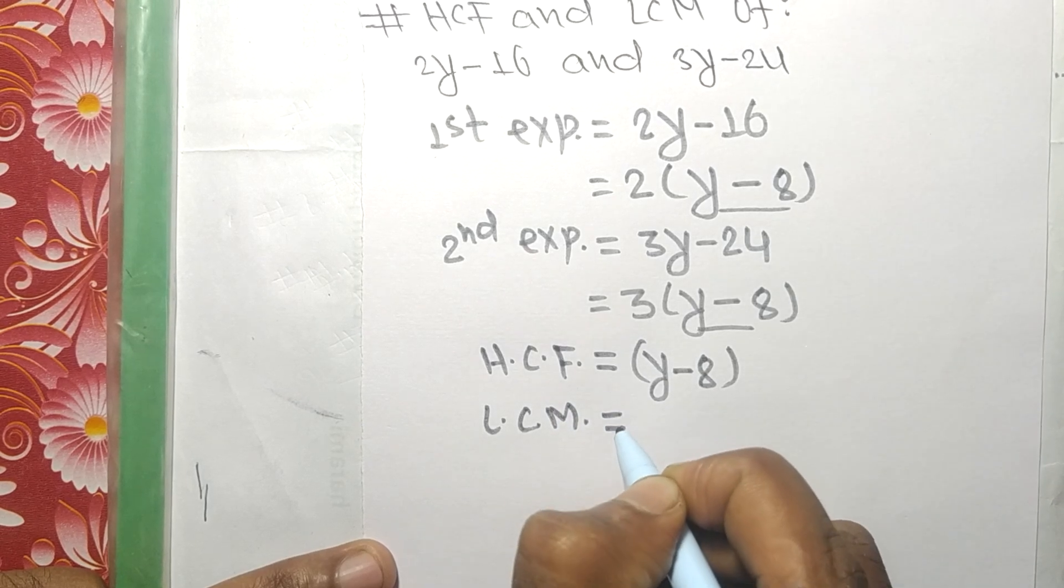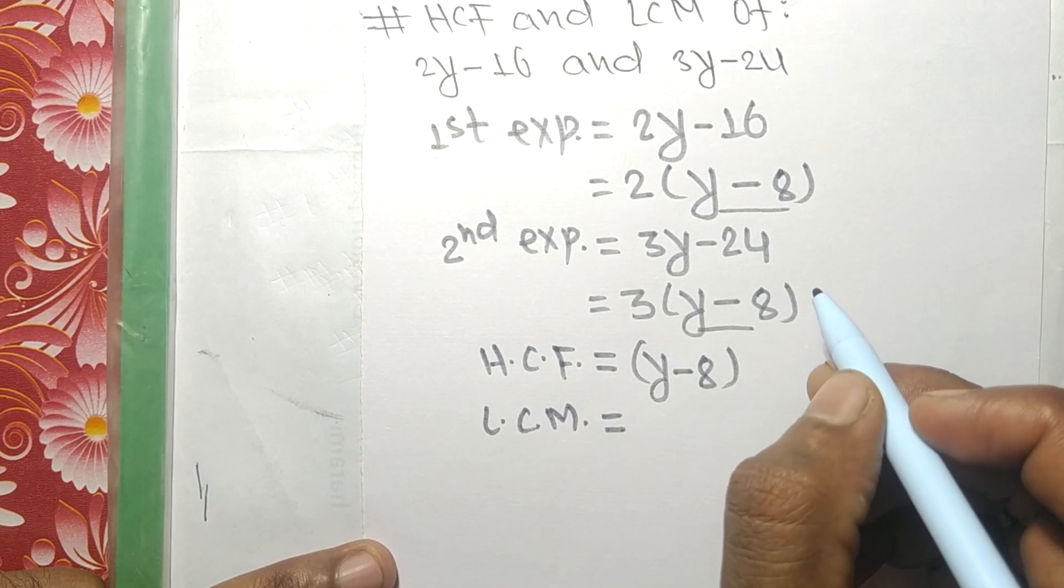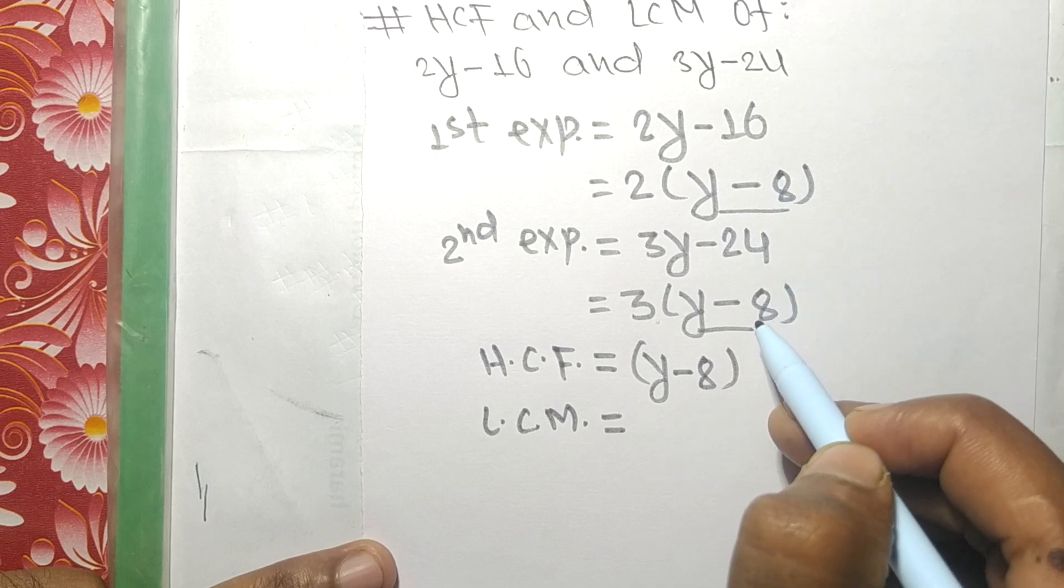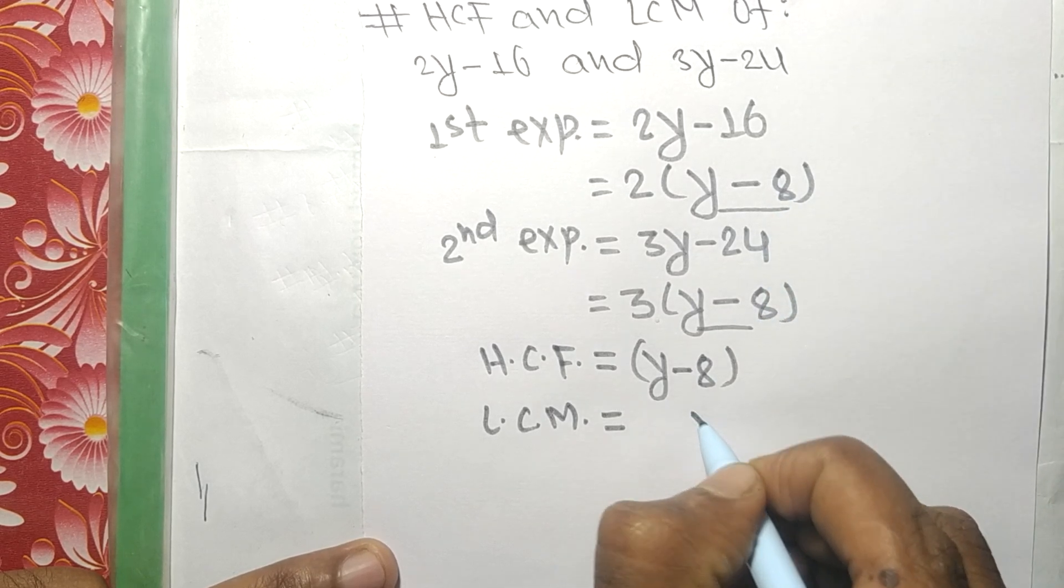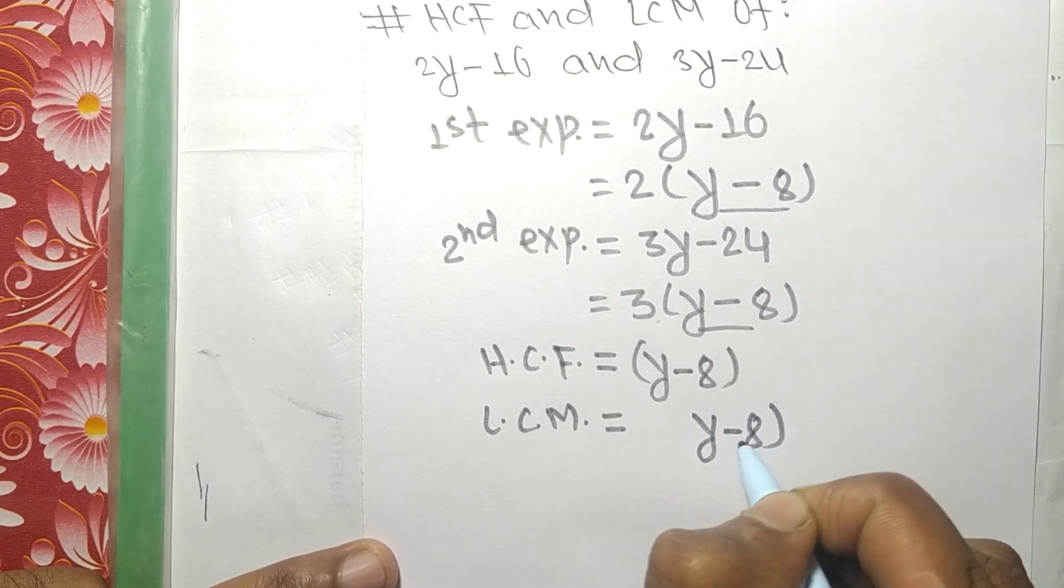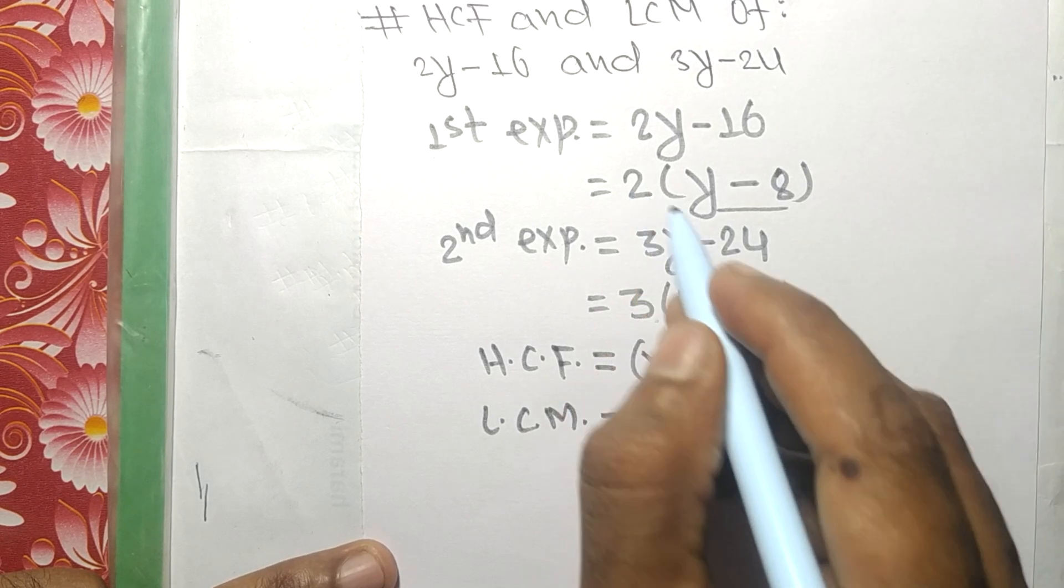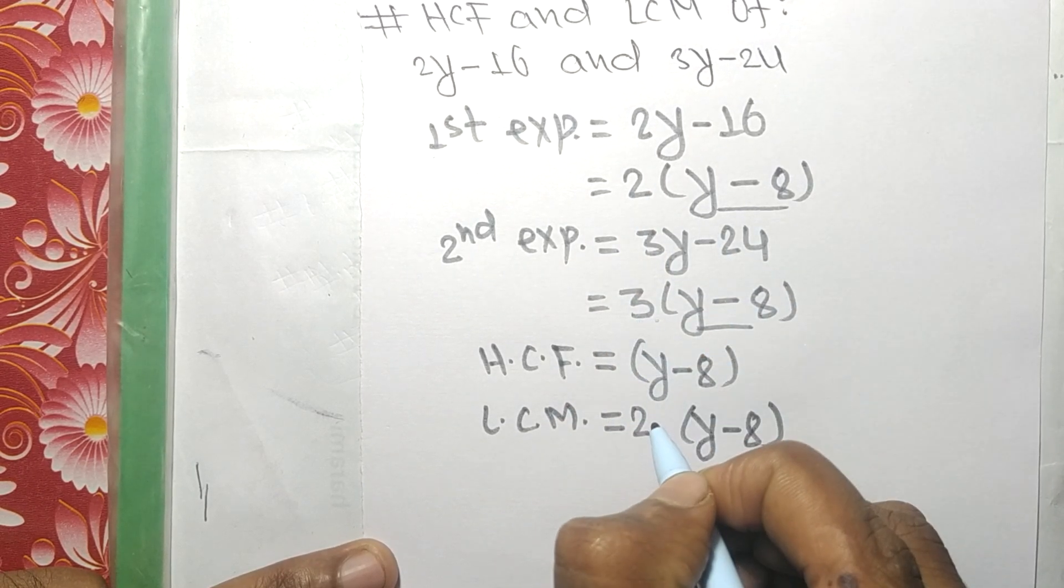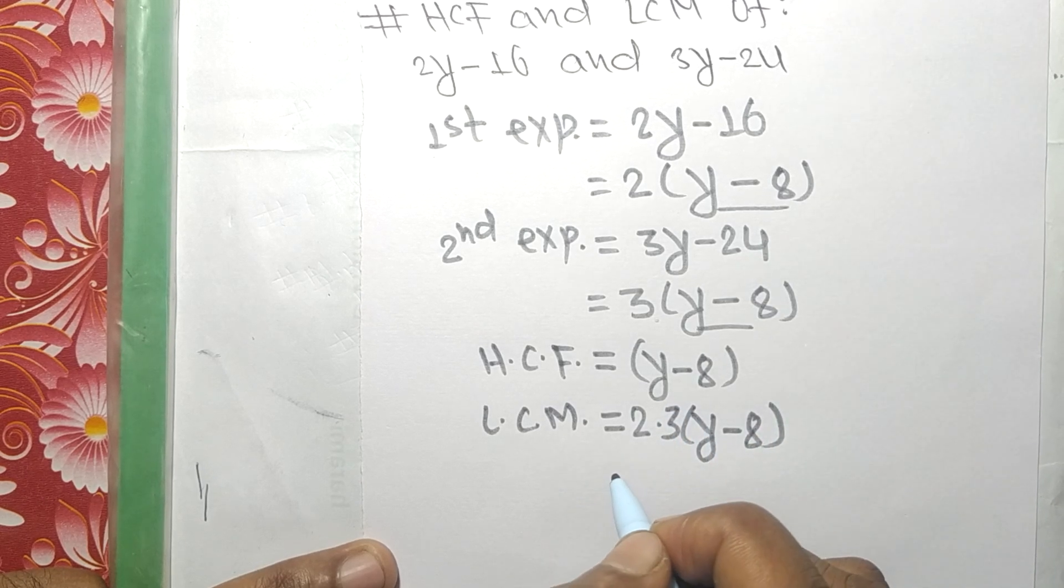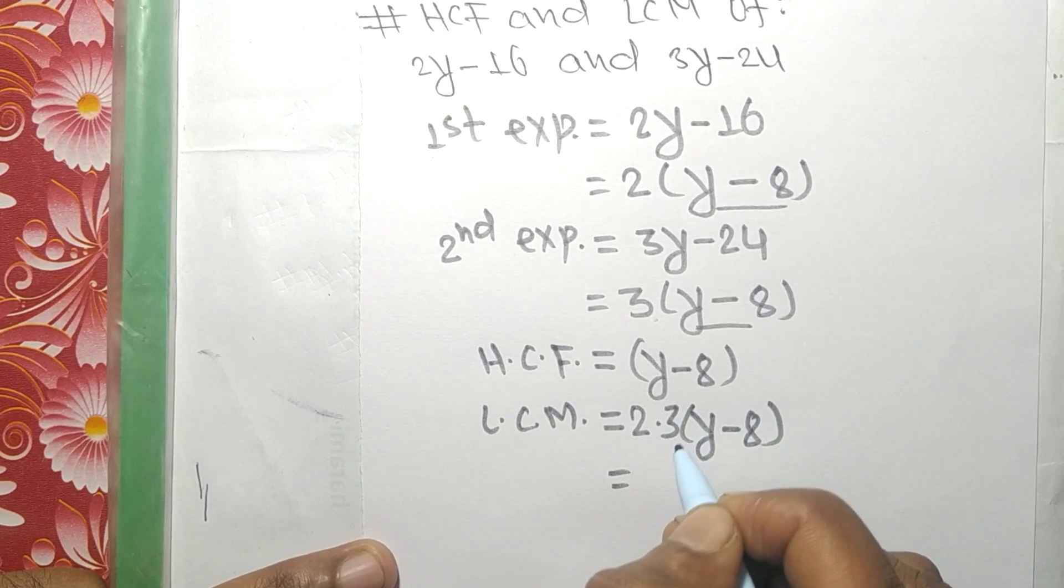LCM is equal to... First we write the common factor, which is y minus 8. Remaining in the first is 2 and in the second is 3, so it is 2 times 3...